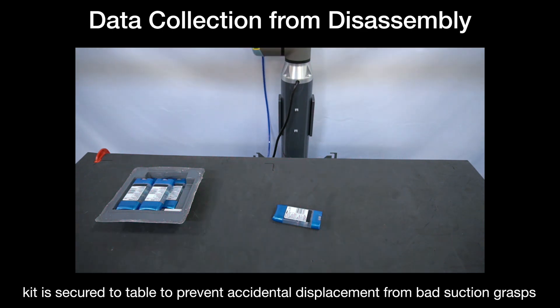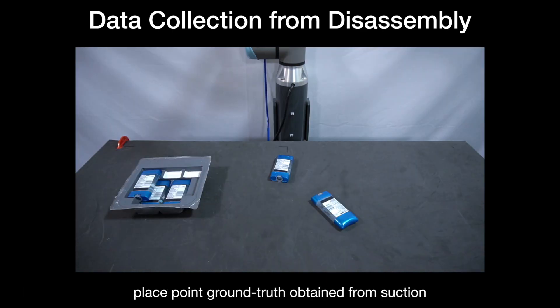By storing all the parameters and images generated during the disassembly process, we can generate the ground truth labels for every module.